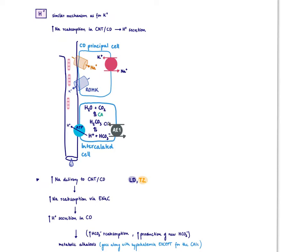Therefore, anything that acts proximal to the collecting duct and delivers more sodium there will cause loss of both potassium and protons. For loop diuretics and thiazides, this means metabolic alkalosis as an adverse effect. For potassium-sparing diuretics, since ENaC is blocked, fewer protons are lost, which could theoretically lead to metabolic acidosis — though this is not a clinically relevant adverse effect in practice.